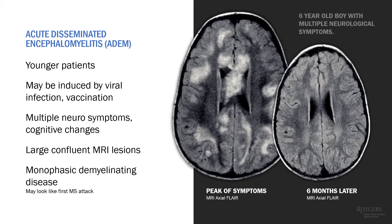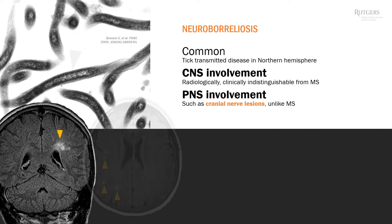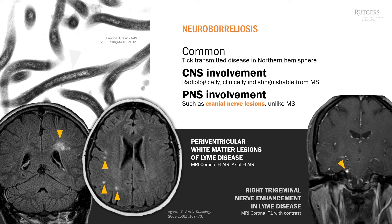Neuroborreliosis: on your board exam there is a high chance you will have a question related to Lyme disease, which is widespread in New Jersey, New York, Massachusetts, and Wisconsin. Lyme can mimic most neurological disorders, both central and peripheral. There is a simple test — you order antibodies: ELISA, and if positive, Western blot. Lyme disease, if untreated, can affect the brain, heart, and joints.